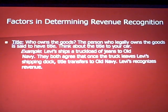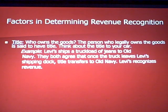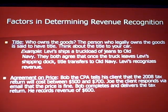Here's an example: Levi's ships a truckload of jeans to Old Navy. They both agree that once the truck leaves Levi's shipping dock, title transfers to Old Navy — so Levi's recognizes revenue at that point. Another factor is agreement on price between the customer and the company.